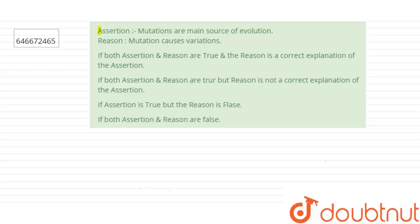The question is: Assertion - Mutations are main source of evolution. Reason - Mutation causes variations. If both assertion and reason are true and the reason is correct explanation of the assertion. If both assertion and reason are true but reason is not correct explanation of assertion. If assertion is true but reason is false. If both assertion and reason are false.